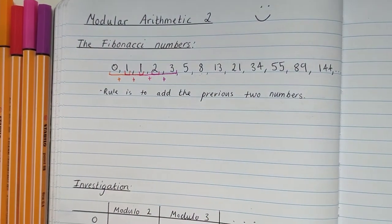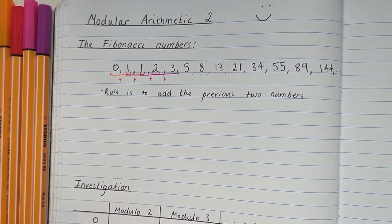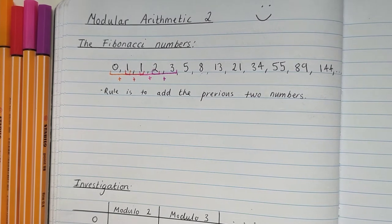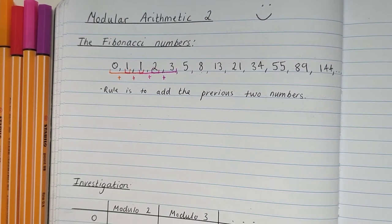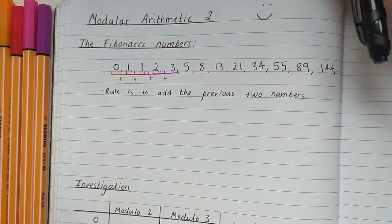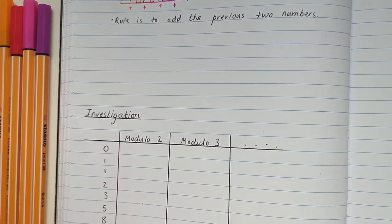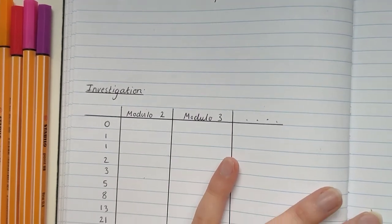You can keep doing this and the sequence will actually go on forever and ever, because we can always keep adding the previous two numbers. Now that we've looked at the Fibonacci numbers, we're going to see what happens when we do some modular arithmetic with the Fibonacci numbers. We're going to do a bit of an investigation on that.